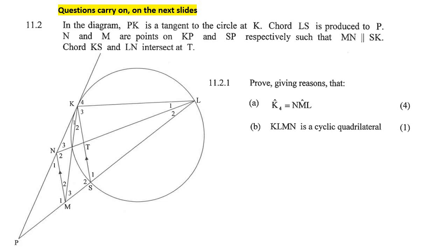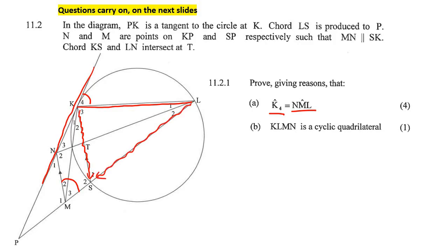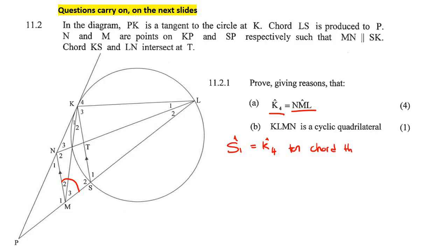The first question, for four marks: prove that K4 — which is here — is equal to angle NML, which is that whole angle. When I see K4, I know that's a tangent, so I can use the tan-chord theorem, because this is the tangent and this is the chord. So I can take that chord and try to make other angles in the circle. That means angle S1 is the same as K4 because of the tan-chord theorem.